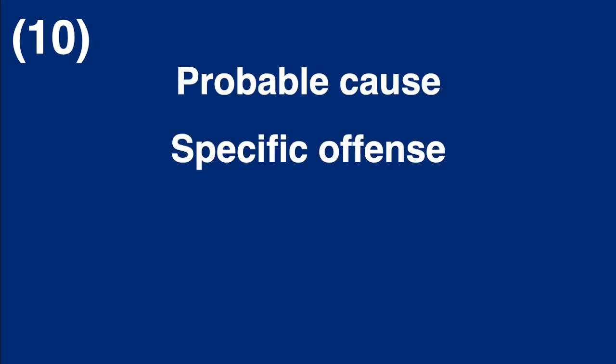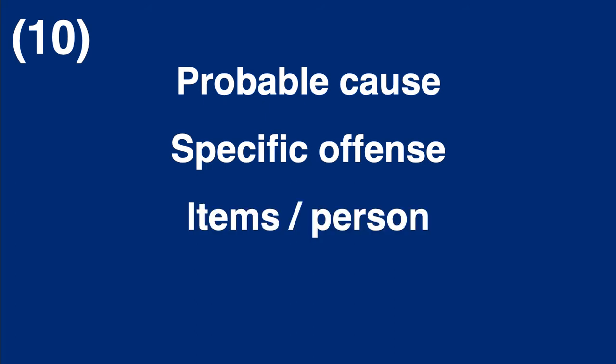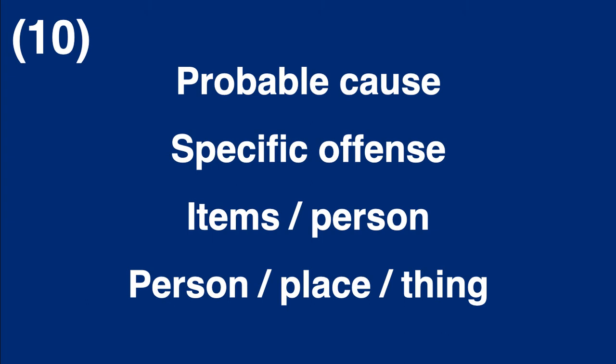According to CCP 18.01(c), a search warrant may not be issued for mere evidence unless the affidavit sets forth sufficient facts to establish probable cause that a specific offense has been committed, that the specifically described property or items to be searched for or seized are evidence of that offense or that a particular person committed that offense, and that the property or items constituting evidence to be searched for or seized are located at or on the particular person, place, or thing to be searched.